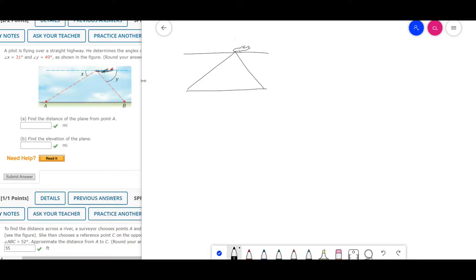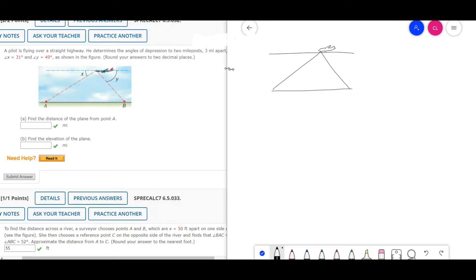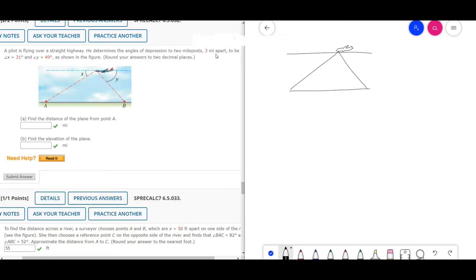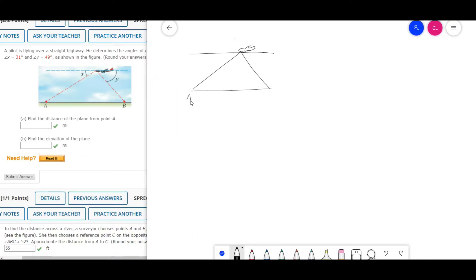Let's take a look at the given information. The two mile posts are three miles apart. Angle X is given to be 31 degrees, angle Y was given as 49 degrees.